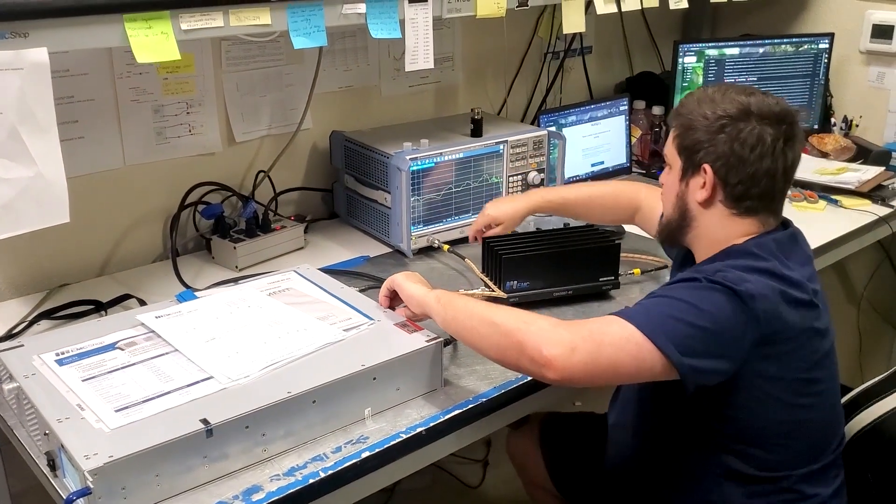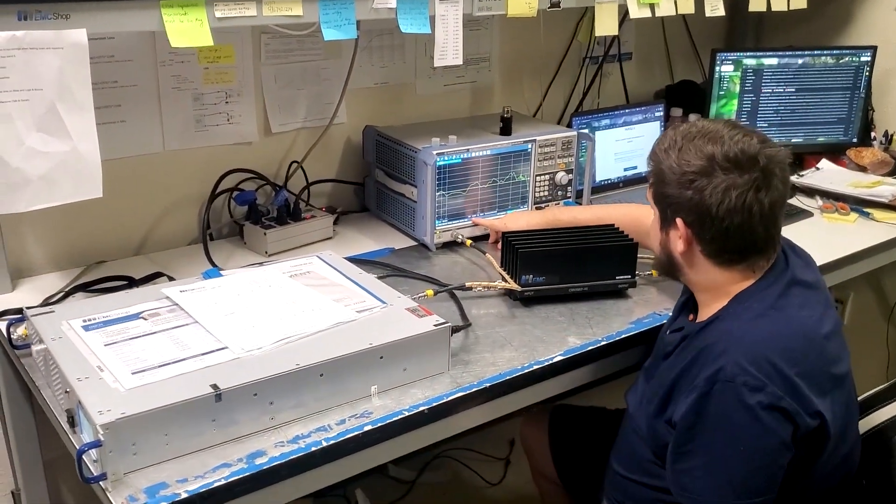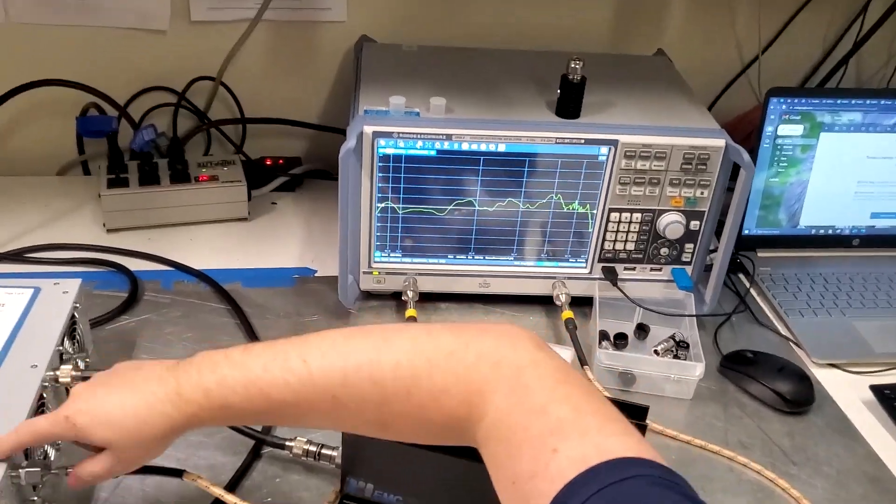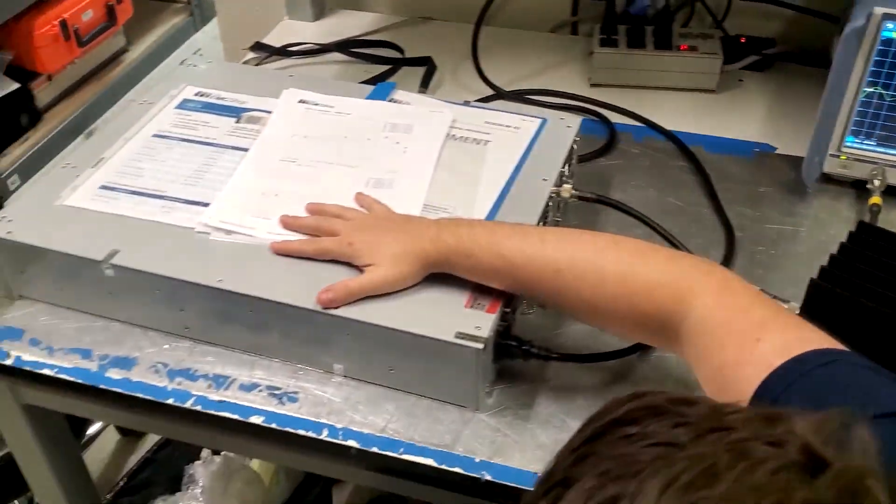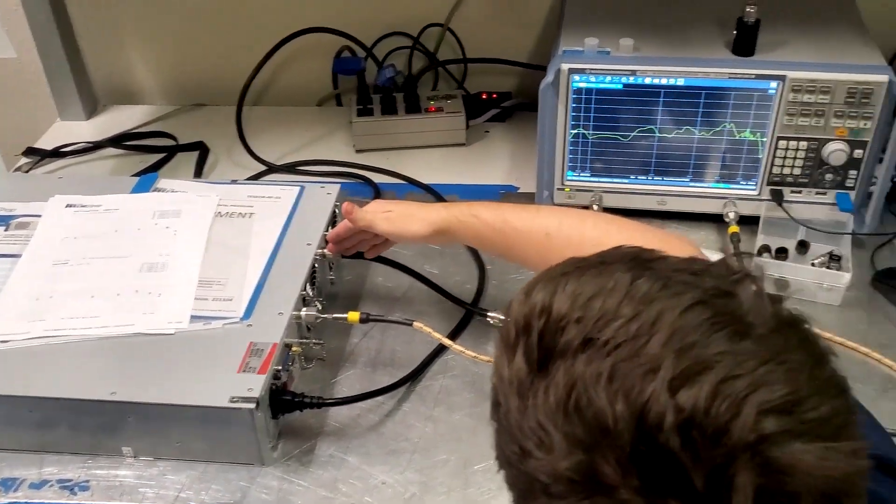Now again, so I have it set to negative 10 power. It's coming out of port 1. It's going into RF input. It's being amplified. It's coming out of RF output.